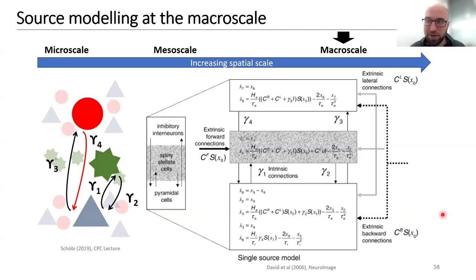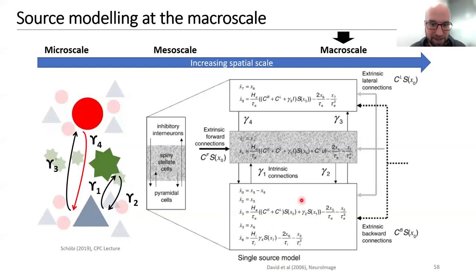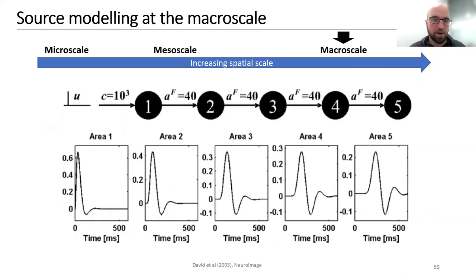Looking at the full system of equations, we have pairs of equations describing each population — except for pyramidal cells where we have two pairs plus a difference equation. The notation is slightly different but the content is exactly what was described. Hopefully this helps you develop an intuition for what's going on in these equations.